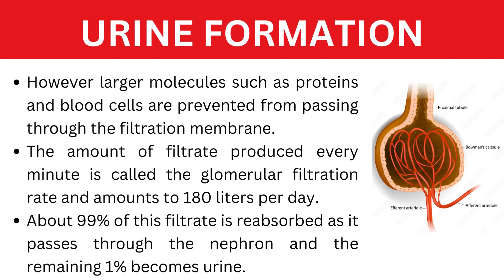However, larger molecules such as proteins and blood cells are prevented from passing through the filtration membrane. The amount of filtrate produced every minute is called the glomerular filtration rate and amounts to 180 liters per day. About 99% of this filtrate is reabsorbed as it passes through the nephron and the remaining 1% becomes urine.